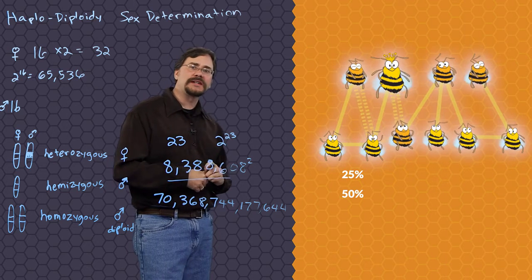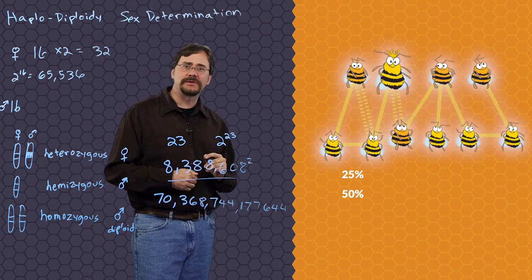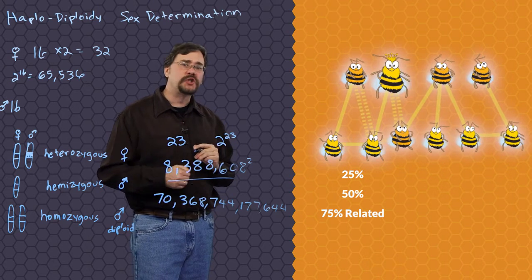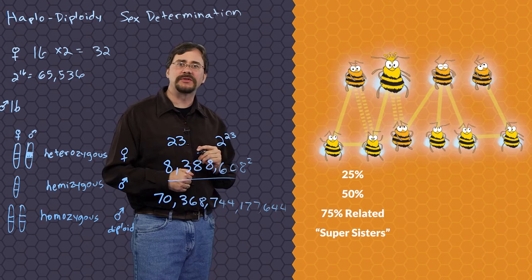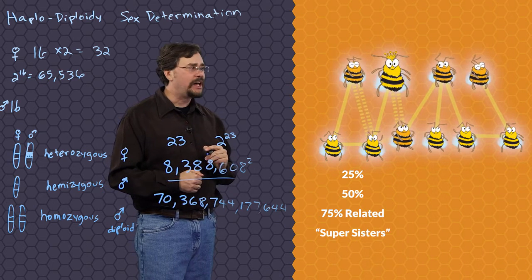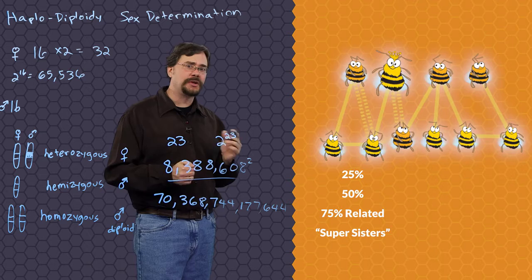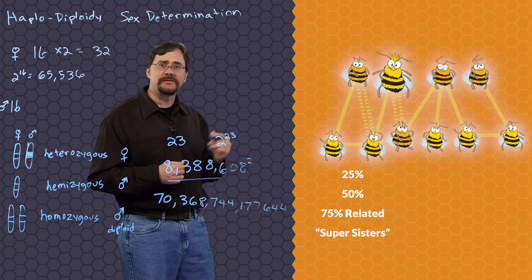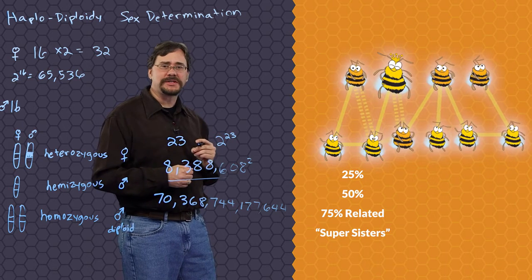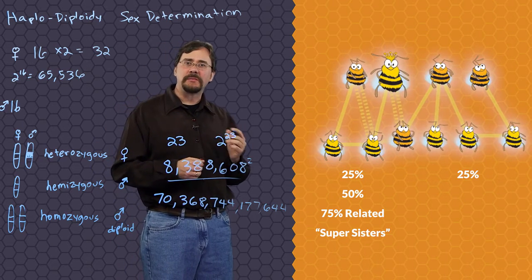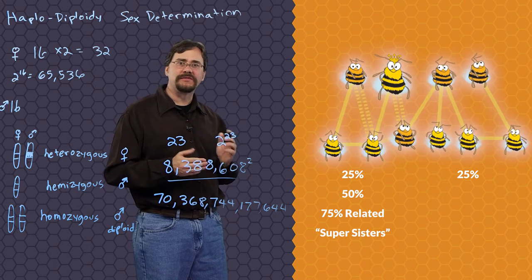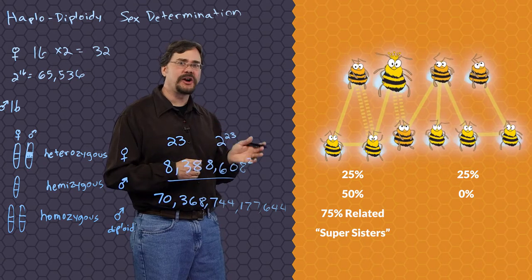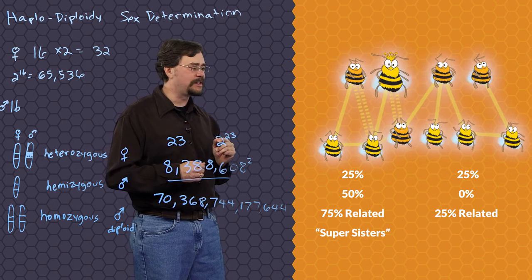So the workers in the same paternal line actually share 75% of their genes in common with each other — a relationship we call super sisters. They are 75% related to each other. Workers in other patrilines share similar relationships to their sisters and parents. Worker bees from different patrilines, however, share only 25% identical DNA from their mothers and don't share any DNA from their different fathers. We can call the bees in this relationship sub-sisters, and they share only 25% DNA with each other.